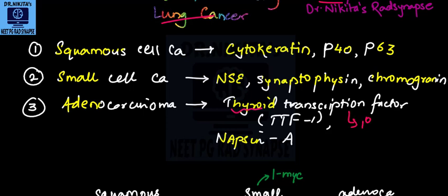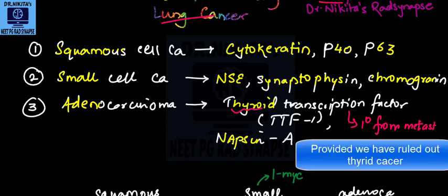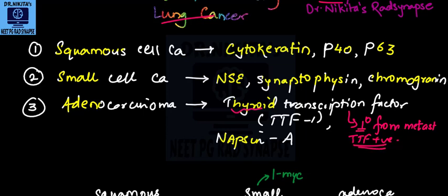Also remember that when you have thyroid transcription factor positive, so it helps us to differentiate primary lung adenocarcinoma from the metastatic adenocarcinoma in the lung. So when it is primary, it is TTF positive, it is TTF positive. So that helps to differentiate primary from the metastatic adenocarcinoma.